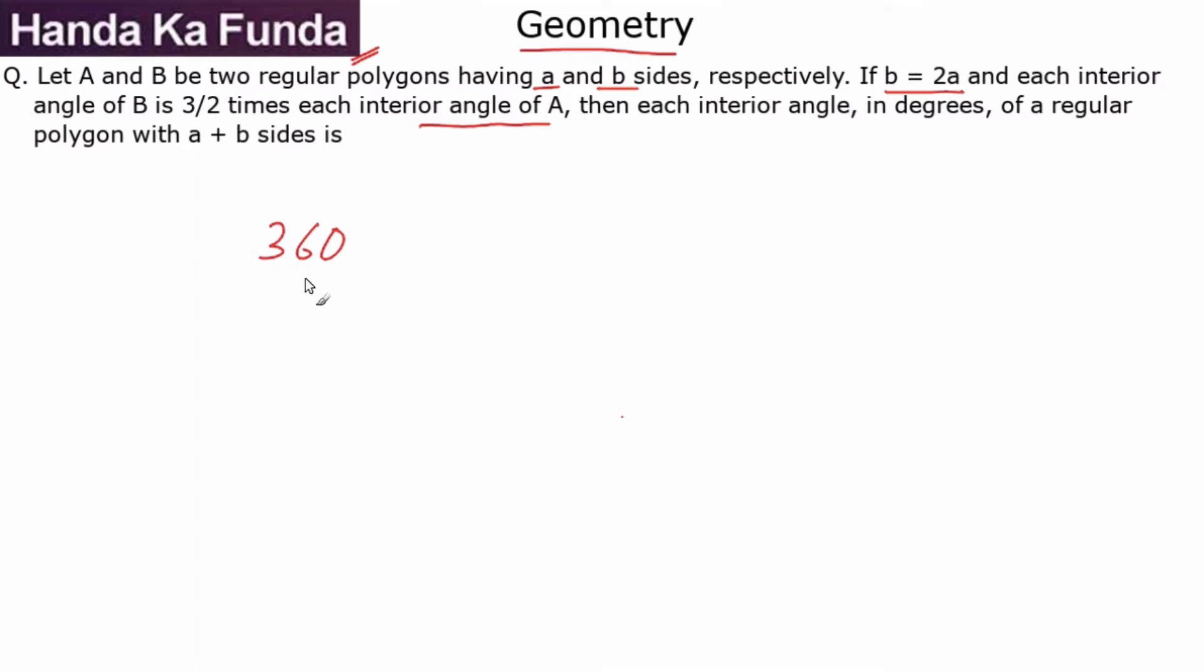So, all exterior angles in the first case when there are A sides will be 360 by A. So, if all exterior angles are going to be 360 by A for the first polygon, all interior angles are going to be 180 degree minus 360 by A.